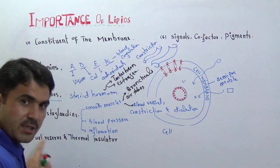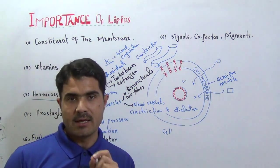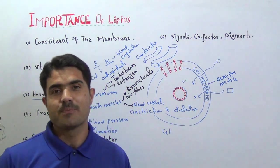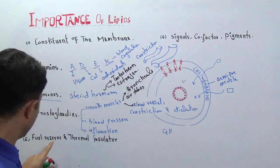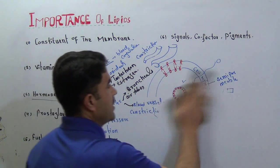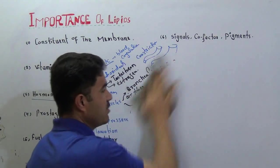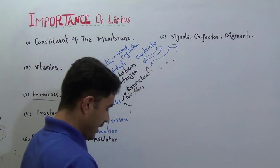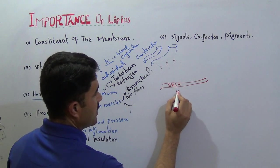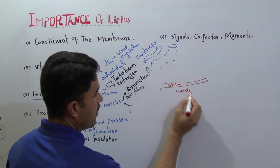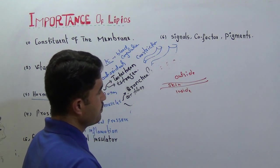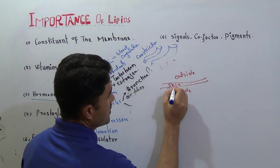That is why we use the term fuel reserve, because fats are also stored in our body. There are special areas in the body where fats are stored. Then we have thermal insulator. Thermal insulator means that lipids help in sustaining your body temperature. Below the skin, you will notice there is some lipid present, and that lipid will help to regulate and maintain your body temperature.